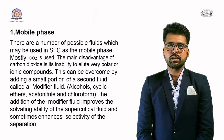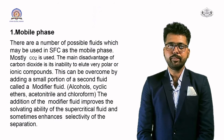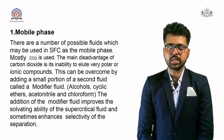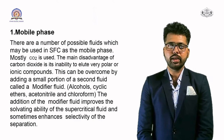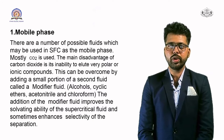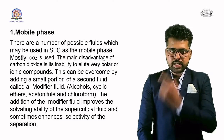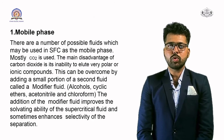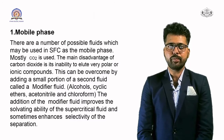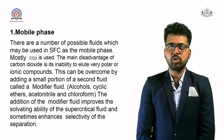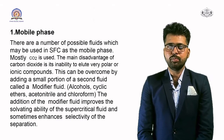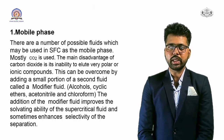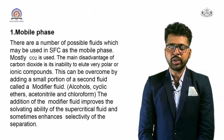Mobile phase: There are a number of possible fluids which may be used in SFC as the mobile phase. Mostly CO₂ is used. The main disadvantage of carbon dioxide is its inability to elute very polar or ionic compounds. This can be overcome by adding a small portion of a second fluid called a modifier fluid, such as alcohols, cyclic ethers, acetonitrile, and chloroform. Adding a modifier fluid improves the solvating ability and sometimes enhances selectivity of the separation.